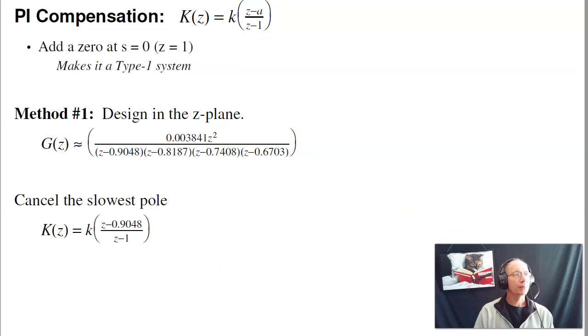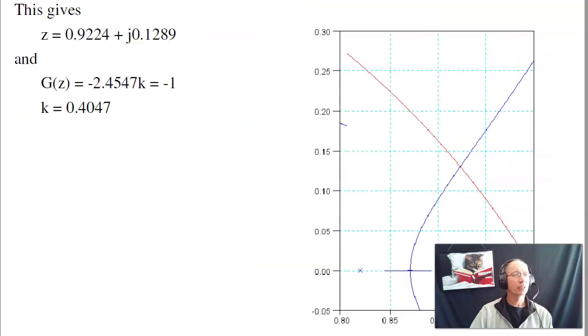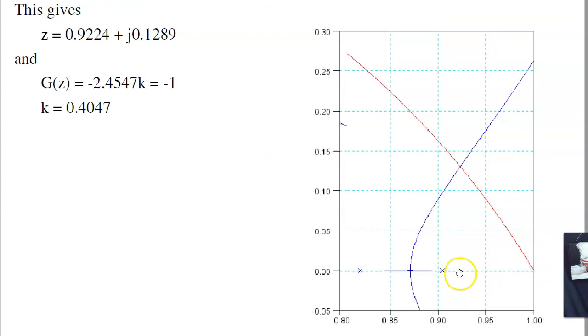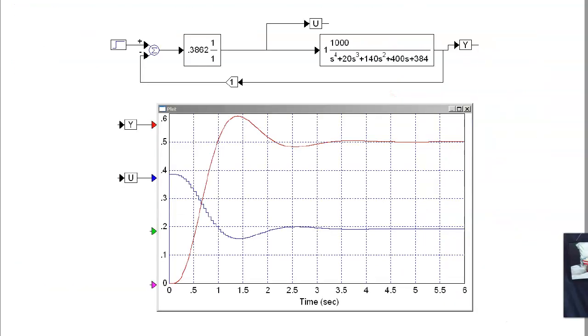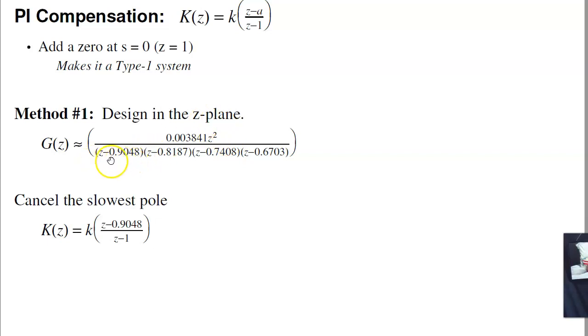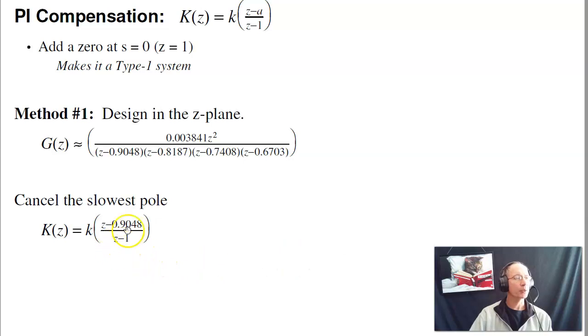A PI compensator is I add a pole at z equals 1. That makes it type 1. And I add a zero anywhere I want at a gain. So what I want to do is pick the zero to cancel the problem child. If I just add a pole, let's go up to here, add a pole at plus 1 right here. These two poles come together and you get a slow system. This is the problem child. That's the pole that's limiting the root locus. I want to get rid of it.